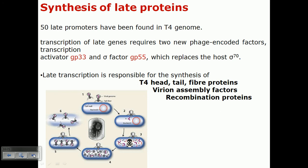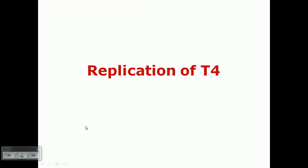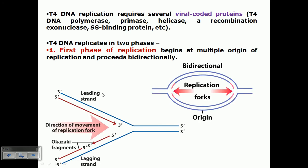Let us talk about the replication of T4. Once they hijack the machinery of the host cell, they start to make early proteins, late early proteins, or middle proteins. In this condition, they need to duplicate their genome, otherwise they won't have anything to package. For packaging, they require the genome as well as structural parts, which may be produced from previously produced mRNA transcripts.